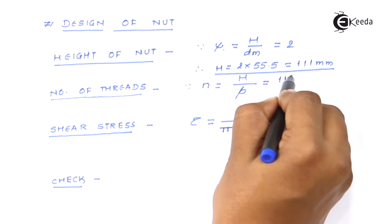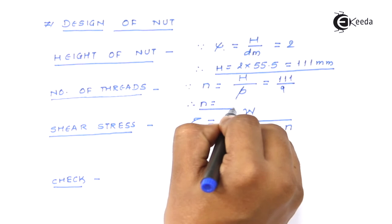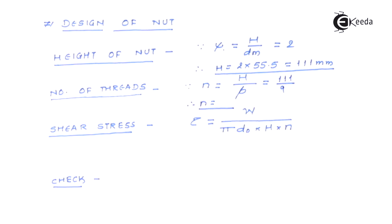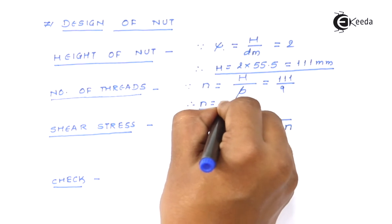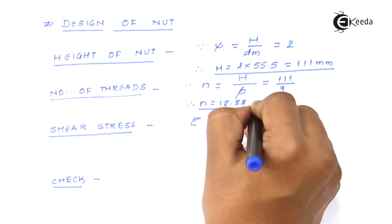Next thing is the number of threads. Of course the number of threads will be given by the total height of nut divided by the pitch so it comes out to be 3 and therefore value of n number of thread becomes the value of n becomes somewhere around 12.33.